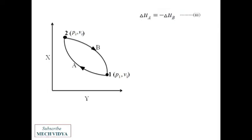Now if I consider a third path 2c1, shown by the blue color, through which the system returns to 1 instead of path 2b1. By doing the same calculations, we can write that the change in internal energy for path a equals negative of the change in internal energy for path c. Let this be equation 4.